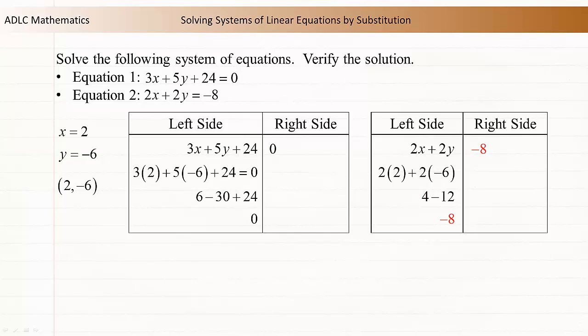The values x = 2 and y = -6 satisfy both equations of the system, so they are a solution to the system.